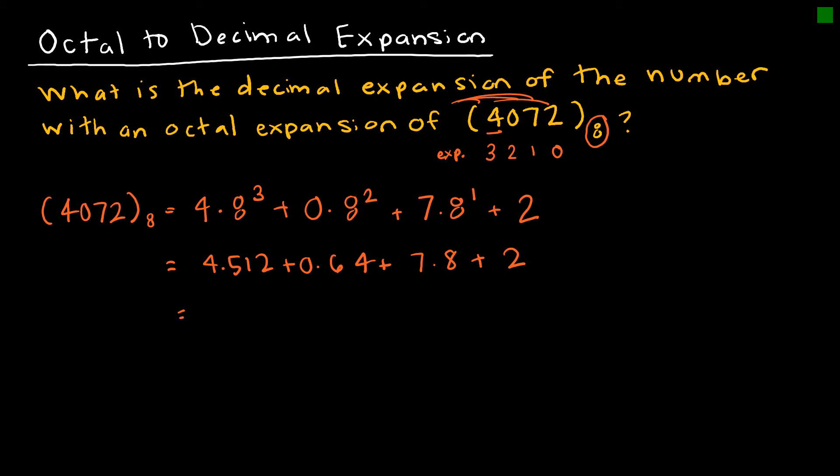Just as I did before, you can show that step in between if you want to show that this is 4 times 512 and 0 times 64 and 7 times 8 plus 2. Or you could just go straight to this step, which is to find 2048 plus 0 plus 56 plus 2. And then my final answer would be 2106. This is base 10, so it's okay to go ahead and put that base 10. When we're dealing with base 10, it's not necessary, so it's just as acceptable to just write 2106 as we normally would.